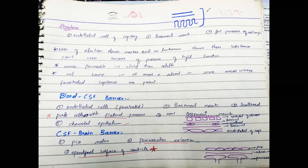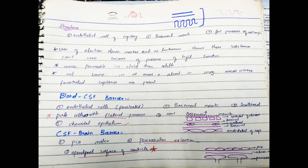So this is everything you should know about CSF — production, volume, pressure, composition, functions, and barriers. From a clinical point of view, hydrocephalus is very important. It involves increased CSF pressure, which can occur due to increased secretion or a blockage in the flow. We will discuss this in the next lecture. Thank you.